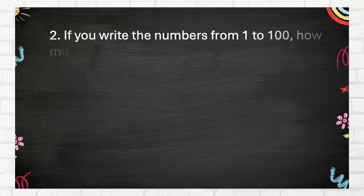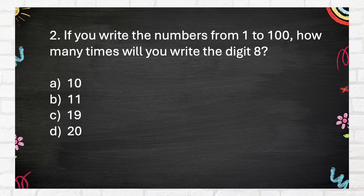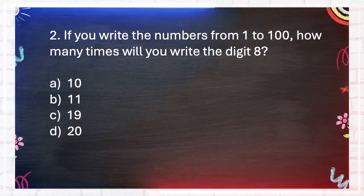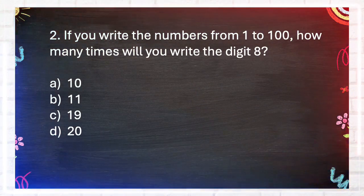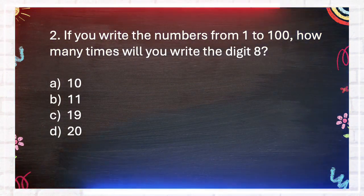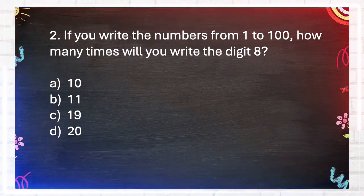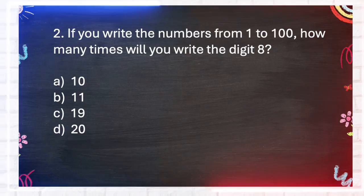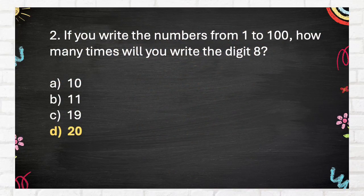Question number 2. If you write the numbers from 1 to 100, how many times will you write the digit 8? A. 10, B. 11, C. 19, D. 20. The answer is D. 20.